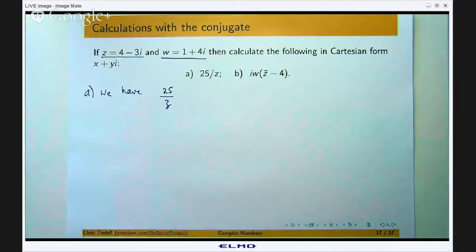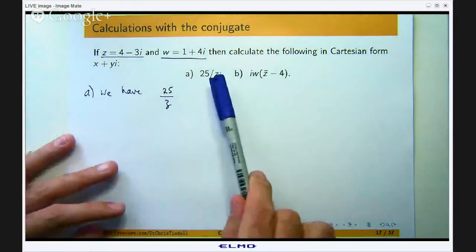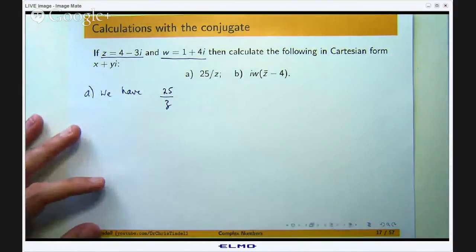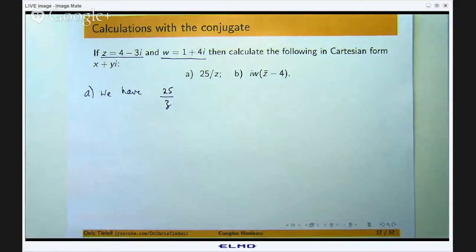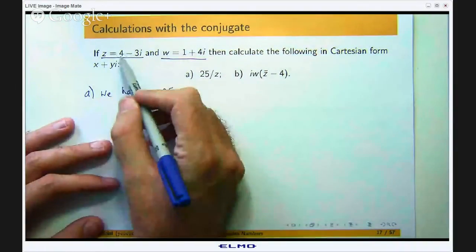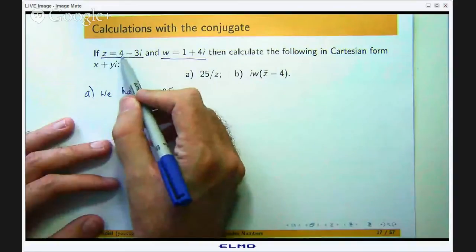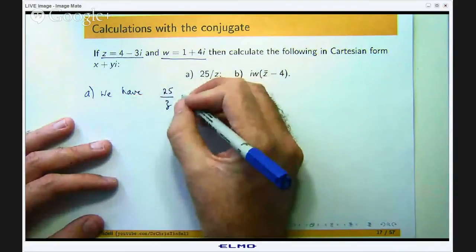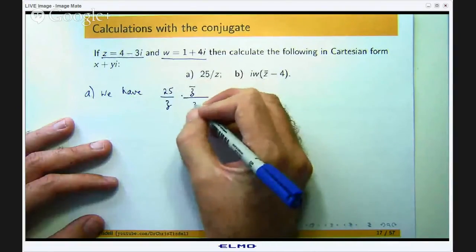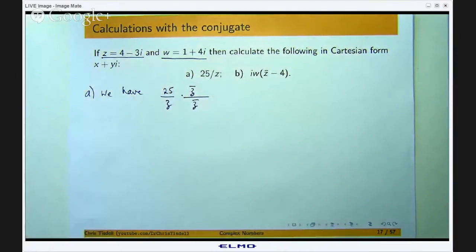Now we know from previous examples that when you are dividing a real or a complex number by a complex number you multiply by a factor of 1 involving the conjugate over the conjugate. So if this is Z, the conjugate Z bar would be 4 plus 3i.